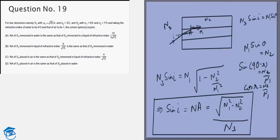So you can calculate the numerical aperture. In the second case, S1 is immersed in a liquid of refractive index 6 by root 15, so n3 is 6 by root 15. N1 and n2 are given to us for S1, similarly for S2.